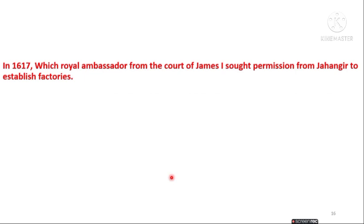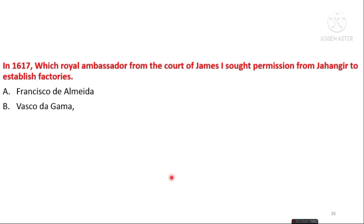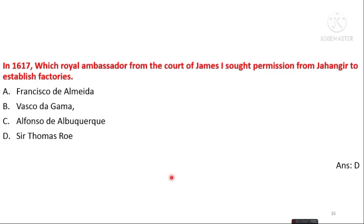The next question is: in 1617, which royal ambassador from the court of James I sought permission from Jahangir to establish factories in India? The options are Francisco de Almeida, Vasco da Gama, Alfonso de Albuquerque, and Sir Thomas Roe. The answer is option D — Sir Thomas Roe was the royal ambassador from the court of James I who sought permission from Jahangir.